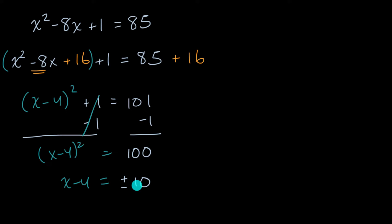And this makes sense. If I took positive 10 squared, I'll get 100. If I take negative 10 squared, I get 100. So x minus four could be either one of those. And now I just add four to both sides of this equation.